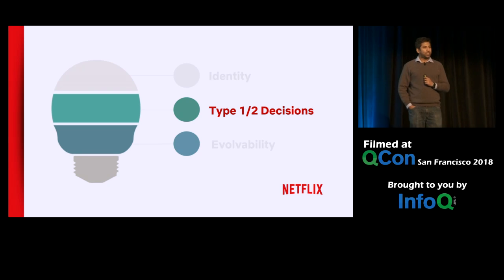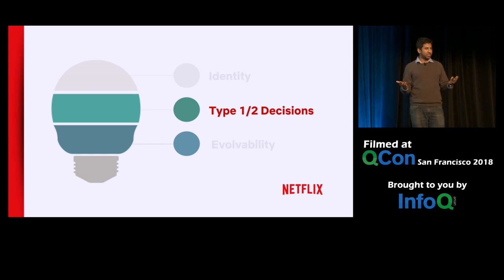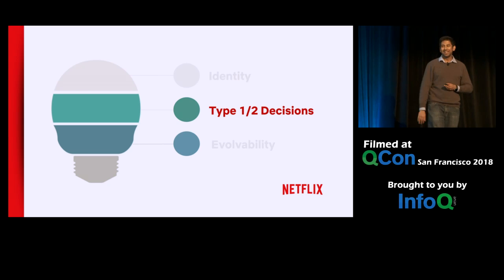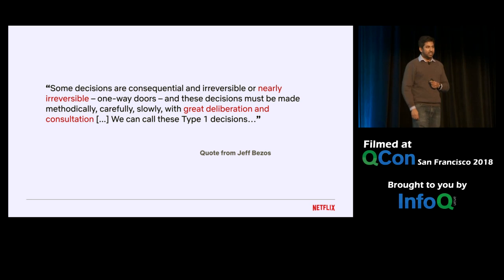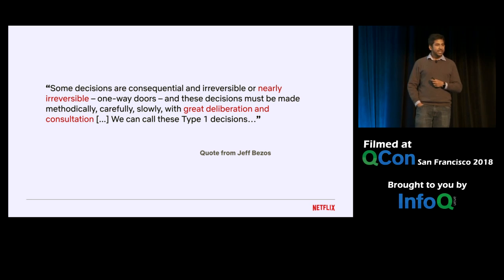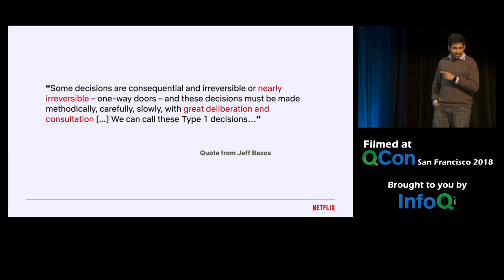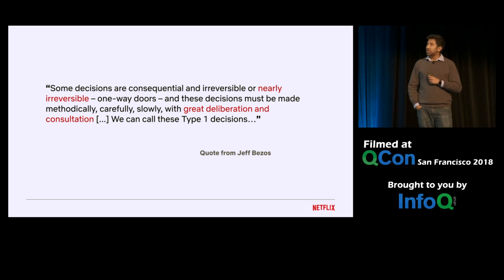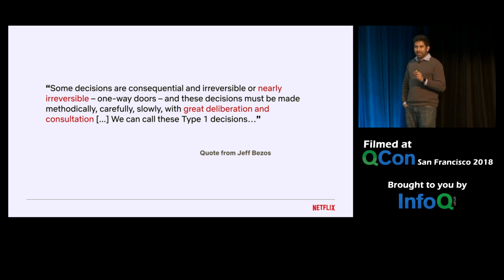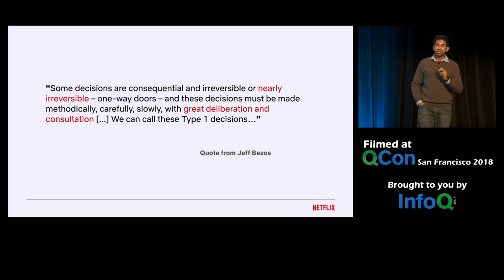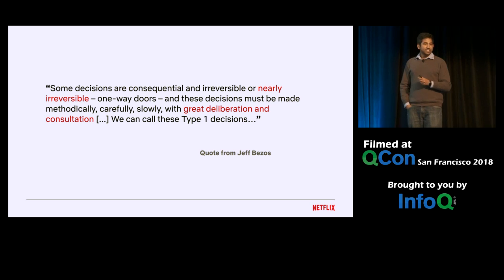Now let's talk about type one and type two decisions. The concept came from Jeff Bezos. In his annual shareholders letter, he talks about the types of decisions which sustain innovation at Amazon. He says: some decisions are consequential and irreversible — or nearly irreversible — one-way doors. These decisions must be made methodically, carefully, with great deliberation and consultation. We call these type one decisions.